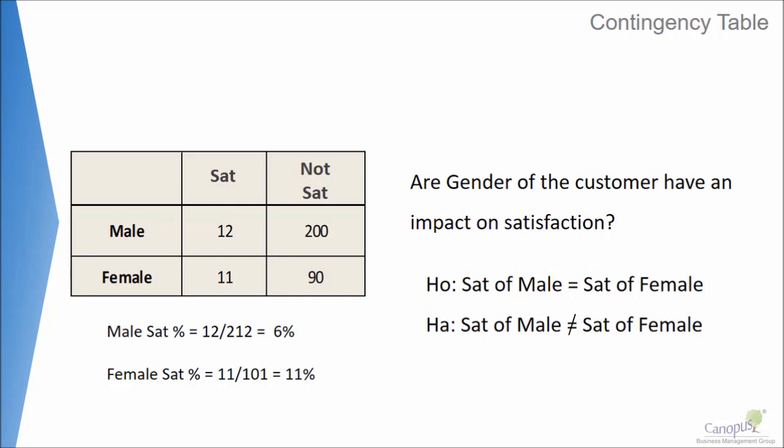If I do a percentage of male satisfaction, that comes to 12 divided by 212 — 212 because 12 satisfied and 200 dissatisfied customers, all put together. It comes to around 6%. For female satisfaction level, it comes to around 11%.